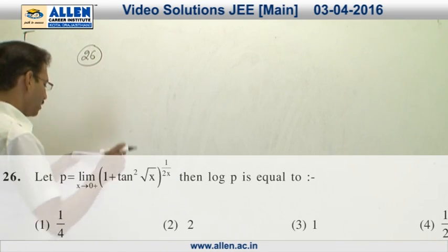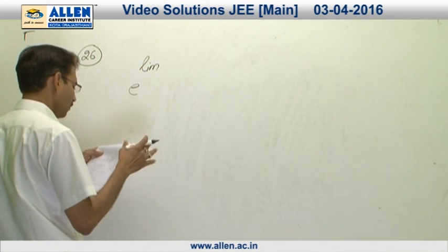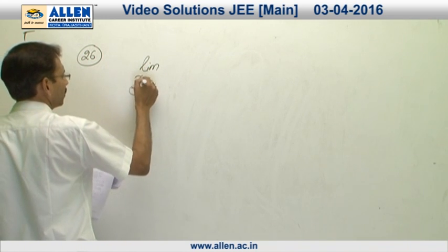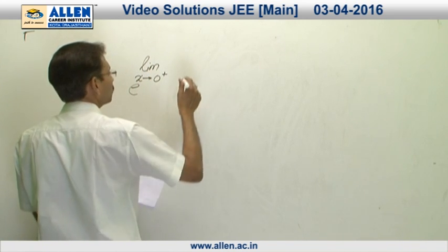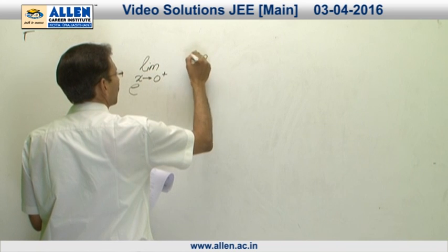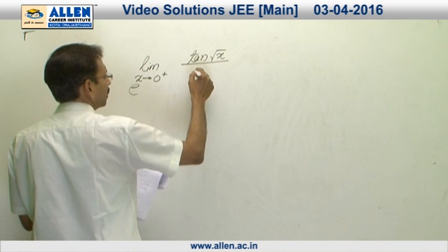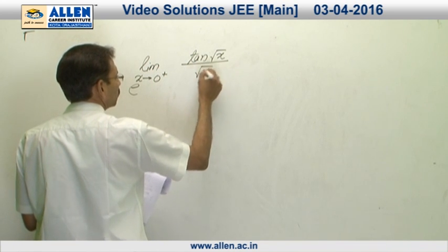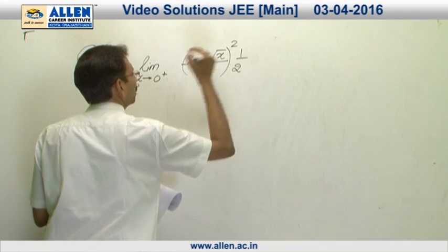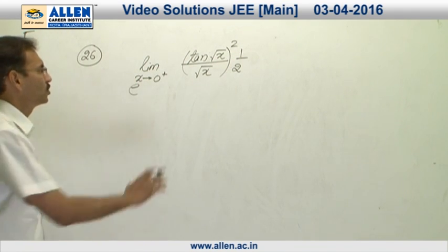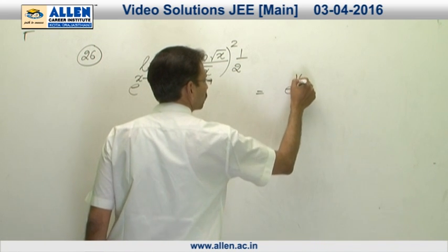Question number 26 is a very simple limit problem. It is in the form of 1 raised to the power infinity. Therefore, we write it as e raised to the power of the limit as x approaches 0 of tan(√x) divided by 2x. Writing x as (√x)², and keeping 2 in the denominator: as x approaches 0, tan(√x)/√x approaches 1, and the remaining factor is 1/2, giving e raised to the power 1/2.